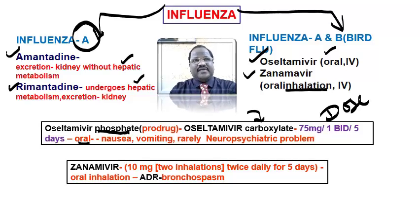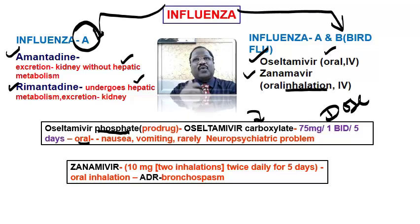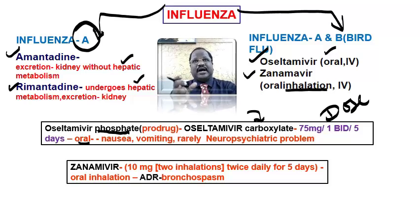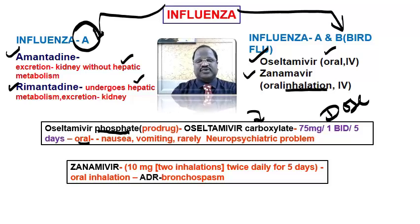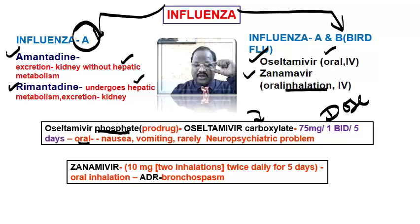Zanamivir is given by oral inhalation route, two inhalations twice daily for 5 days. Since it is inhaled, it may cause bronchospasm. That is why in COPD patients and asthmatic patients it is not a good choice — for them, oseltamivir is a very good option because even inhalation route may cause bronchospasm. The two important drugs useful for both influenza A and B virus are oseltamivir and zanamivir.